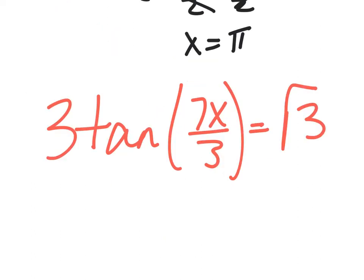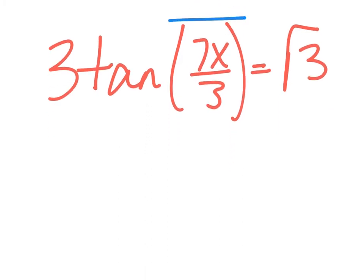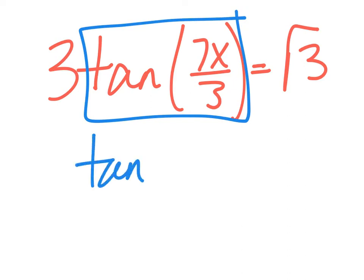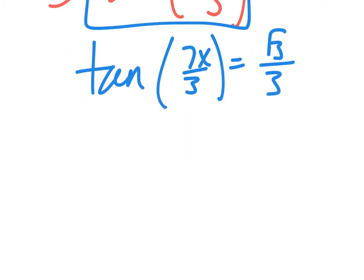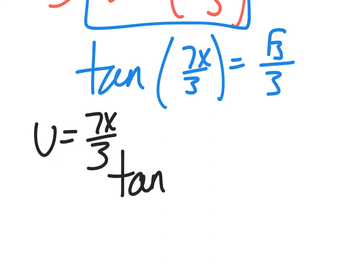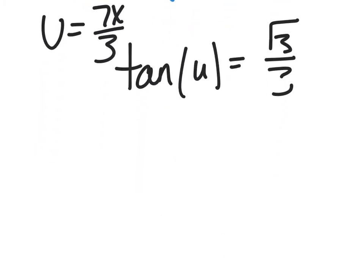Alright, let's try another one. 3 tangent of 7x over 3 equals radical 3. Again, looks intimidating, but we all know how to solve a basic trig equation. Get the trig piece by itself. So I'm going to say tangent of 7x over 3 equals radical 3 over 3. Again, I know regular sine, cosine, and tan of x. I don't know of anything else inside here. So my goal is to do a quick u sub. u equals 7x over 3. So the question is, when does the tangent of u equal radical 3 over 3? Now this time I'm not looking at the graph. I'm racking my brain of the trig values. The tangent of who is radical 3 over 3? The tangent of who has all the 3's? Well, we know that's the tangent of 30. So 30 degrees, of course, is pi over 6.